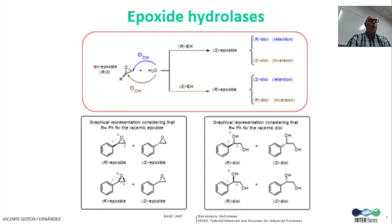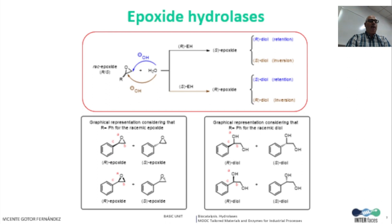Epoxide hydrolases are also interesting hydrolases, usually employing water for the hydrolytic ring opening of the epoxide to form the corresponding diol. Different epoxide hydrolases can be found in nature: R-epoxide hydrolases acting over R-epoxides, or alternatively, S-epoxide hydrolases acting over S-epoxides. Depending on the reaction mechanism, the epoxide can be opened by attack at the less hindered carbon atom — called a retention mechanism — or through the most hindered carbon atom by an inversion mechanism. Thus, the formation of a chiral epoxide and a chiral diol is possible.